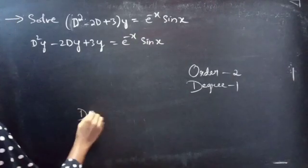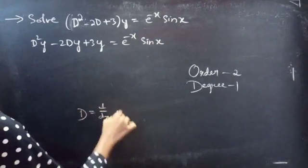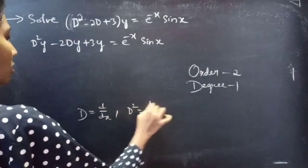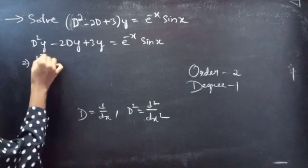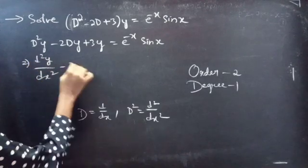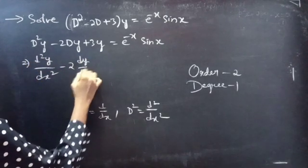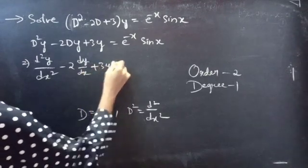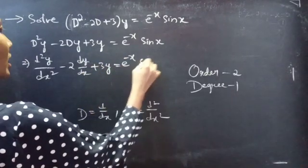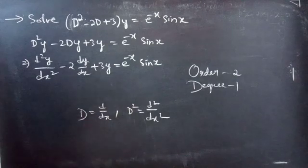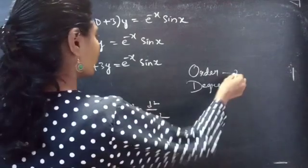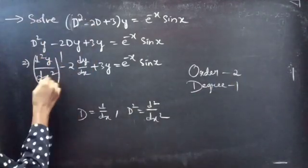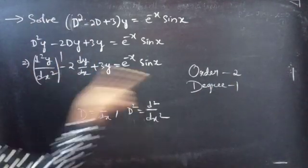We know that d is a differential operator, so d² will be d²/dx². We can write our equation as d²y/dx² - 2·dy/dx + 3y = e^(-x)·sin(x). Here d²y/dx² is the highest derivative, so the order will be 2 and the degree is 1.